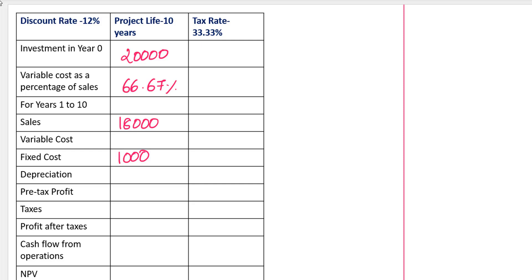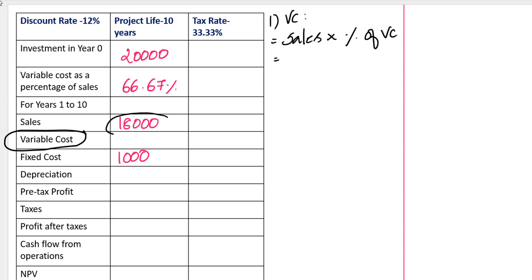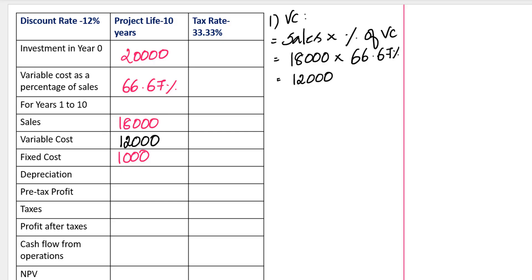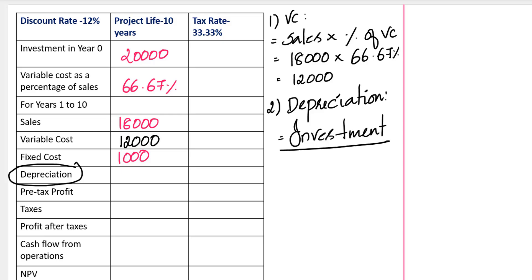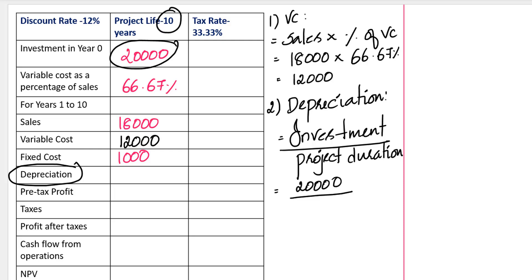Now that we have packed the respective information, let's go for the calculation. At the first level, I need the variable cost. To determine variable cost, we use the formula: sales into variable cost percentage. Sales is 18,000 into variable cost percentage of 66.67, which gives us 12,000. Next, we need to calculate depreciation, which is investment divided by project duration — 20,000 divided by 10 years — giving us 2,000.